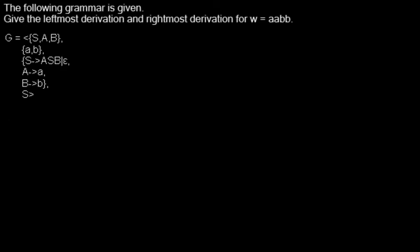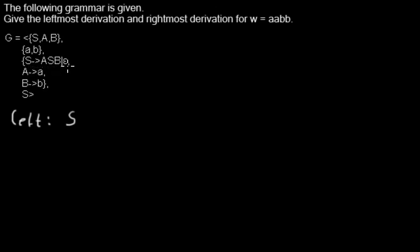I will start with the leftmost derivation. We begin with our start symbol and to derive the word we have to apply some derivation rules. For S we have two rules: either S derives to aSb or to the empty string. Because the word is longer than the empty string, I will go with the first rule.